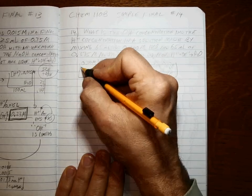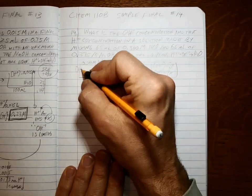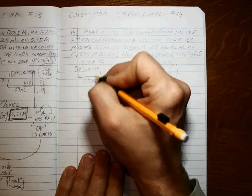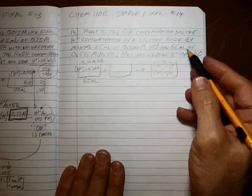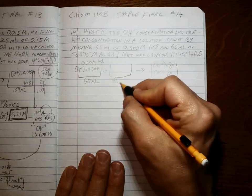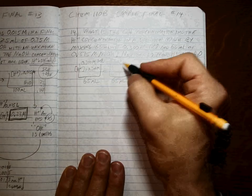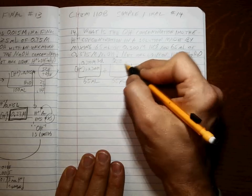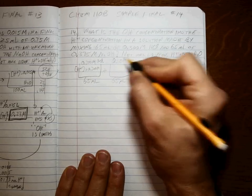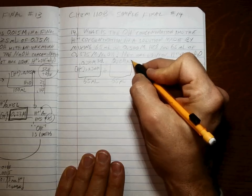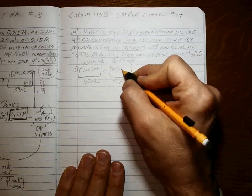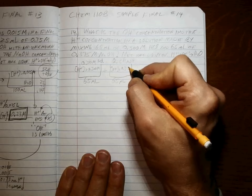which means that H-plus is 0.300 molar in this beaker and 65 milliliters of 0.375 molar NaOH, which means we're going to worry about the hydroxide concentration 0.375 molar.